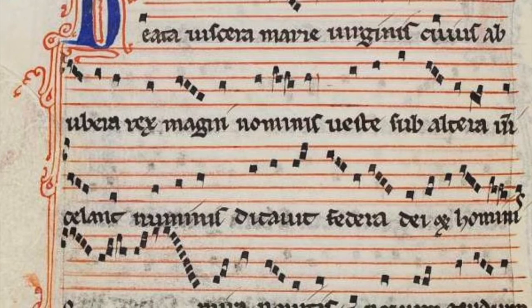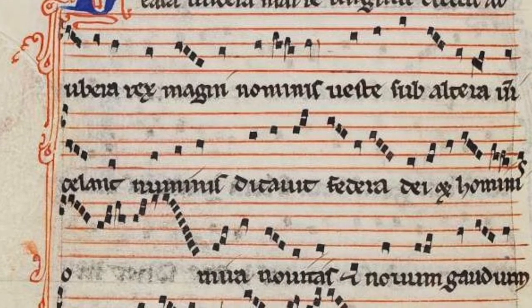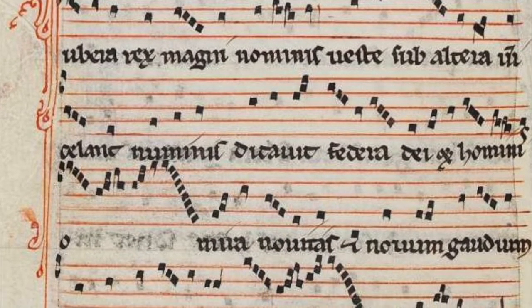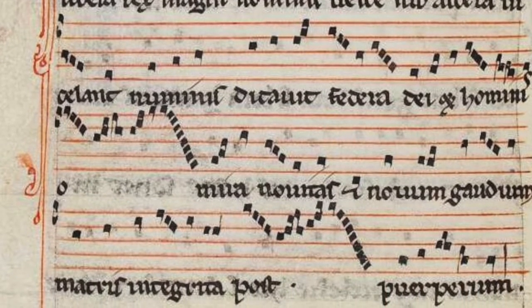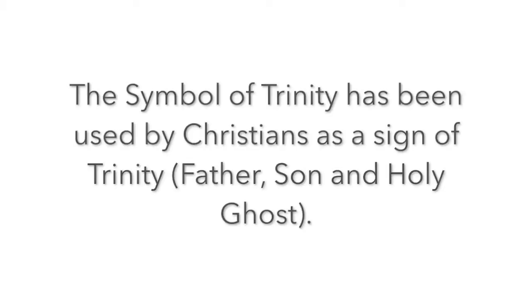At first, the new notation was limited to only certain rhythmic patterns, and the beat had to be subdivided into threes — the symbol of the Trinity. Despite these limitations, much fine polyphonic music was composed during the late 12th century and 13th century.